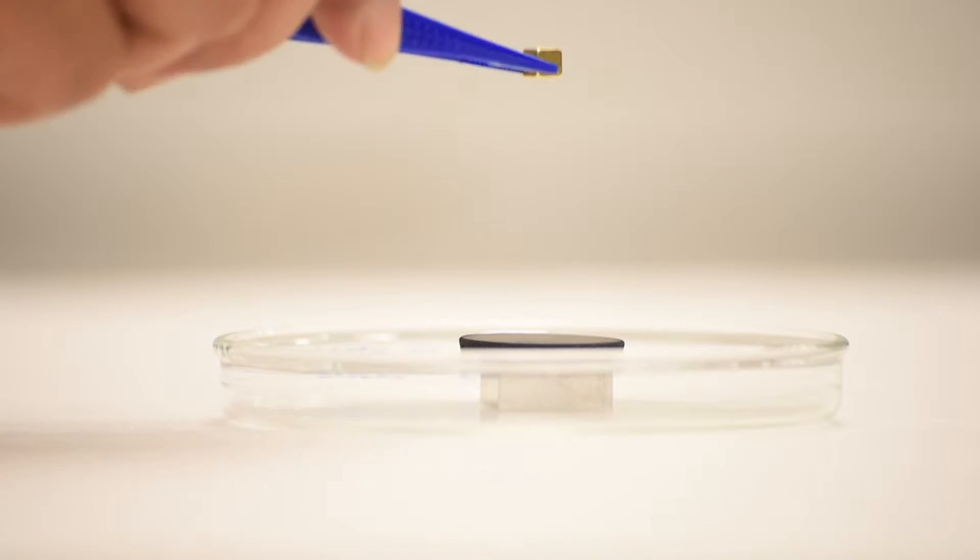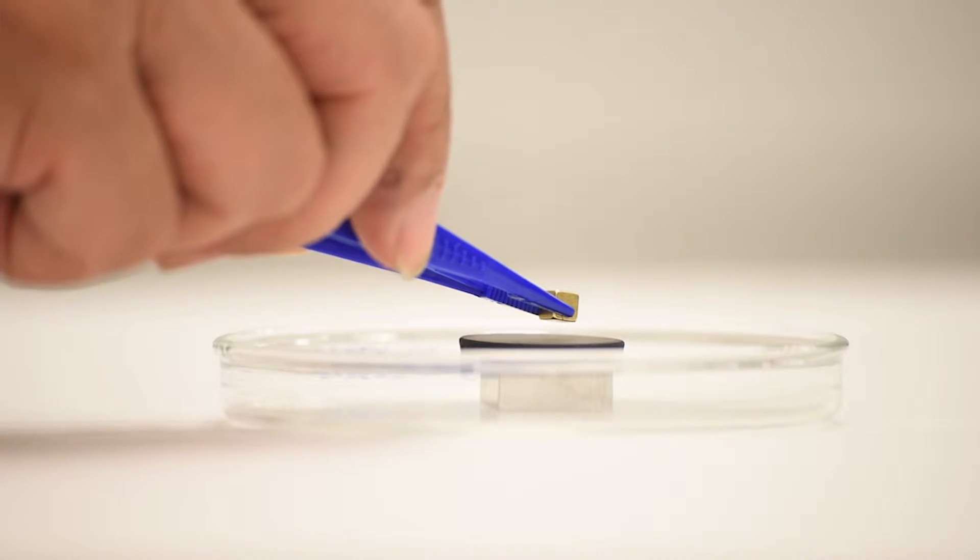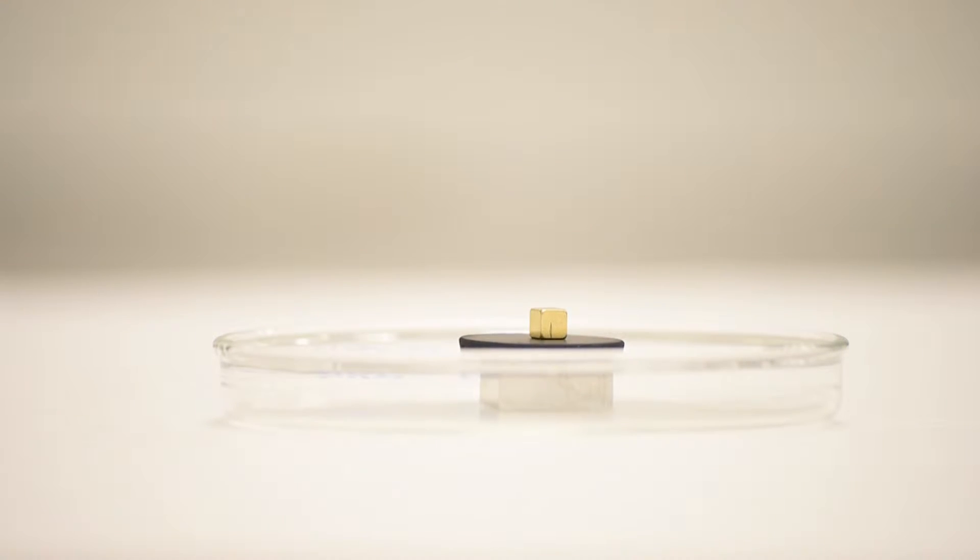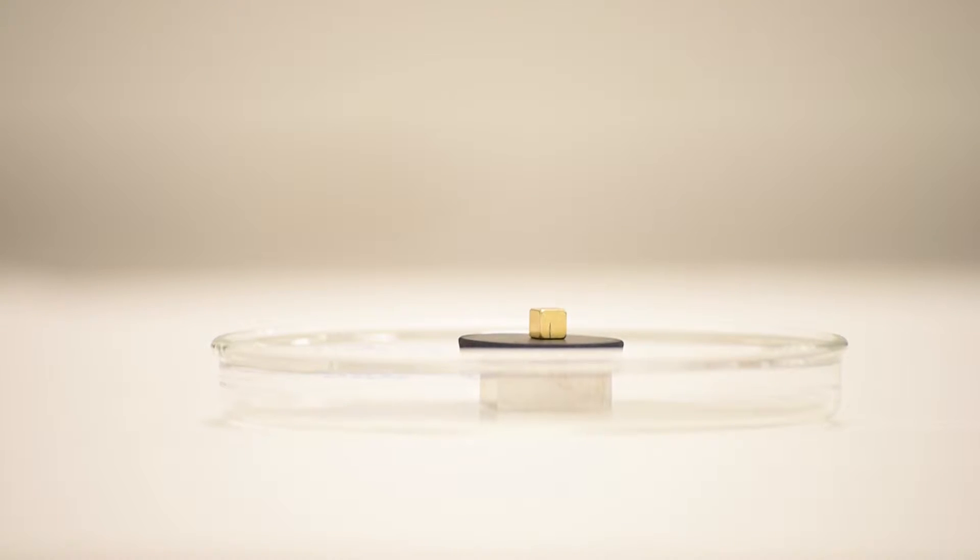So as I put this magnet, a neodymium rare earth magnet with a very strong magnetic field, on the top of it, the magnetic field will just go straight through the superconductor and nothing will happen. So the magnet is just sitting at the top of the superconductor.